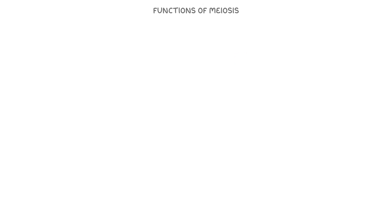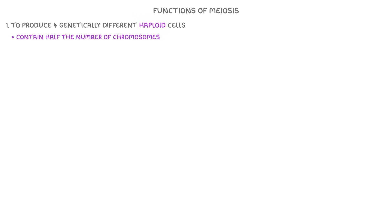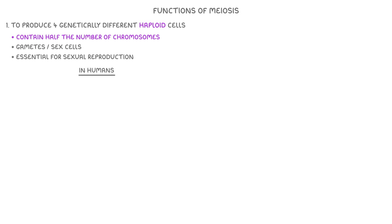Starting with the functions of meiosis, meiosis is a special type of cell division and its main purpose is to produce four genetically different haploid cells. Haploid means they contain half the number of chromosomes compared to a typical body cell. These haploid cells are called gametes, or sometimes sex cells, and they're essential for sexual reproduction. In humans, the gametes are egg cells and sperm cells, and we show that they're haploid by writing a lowercase n next to them.